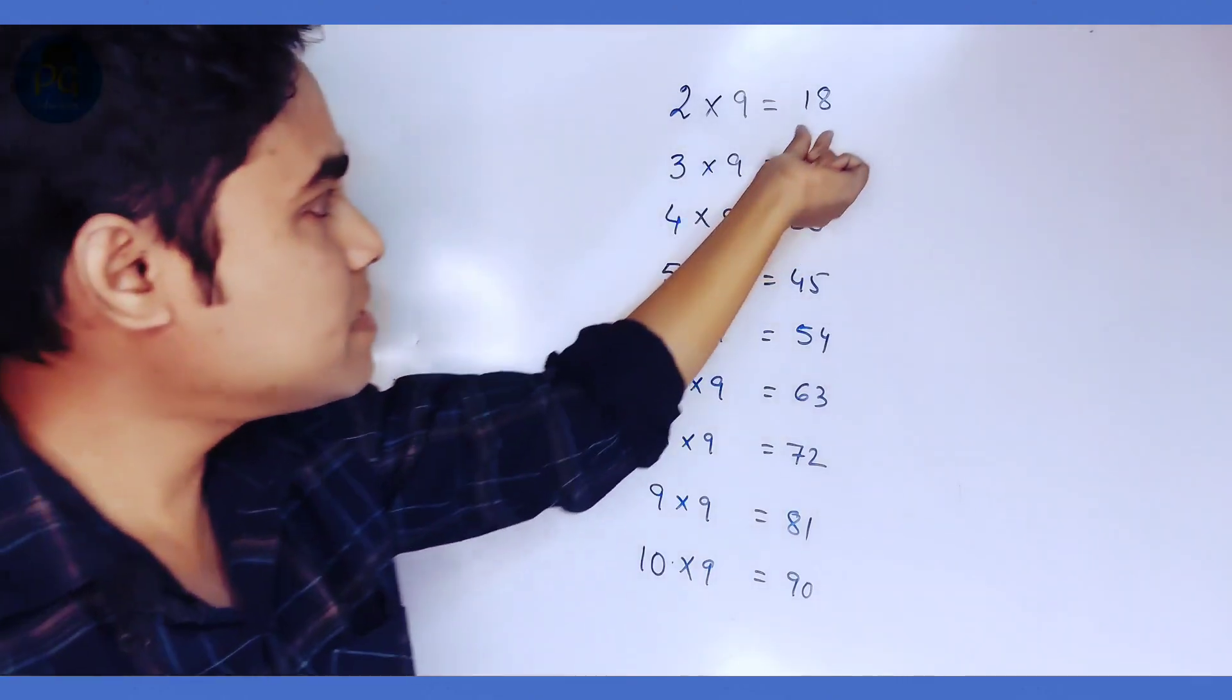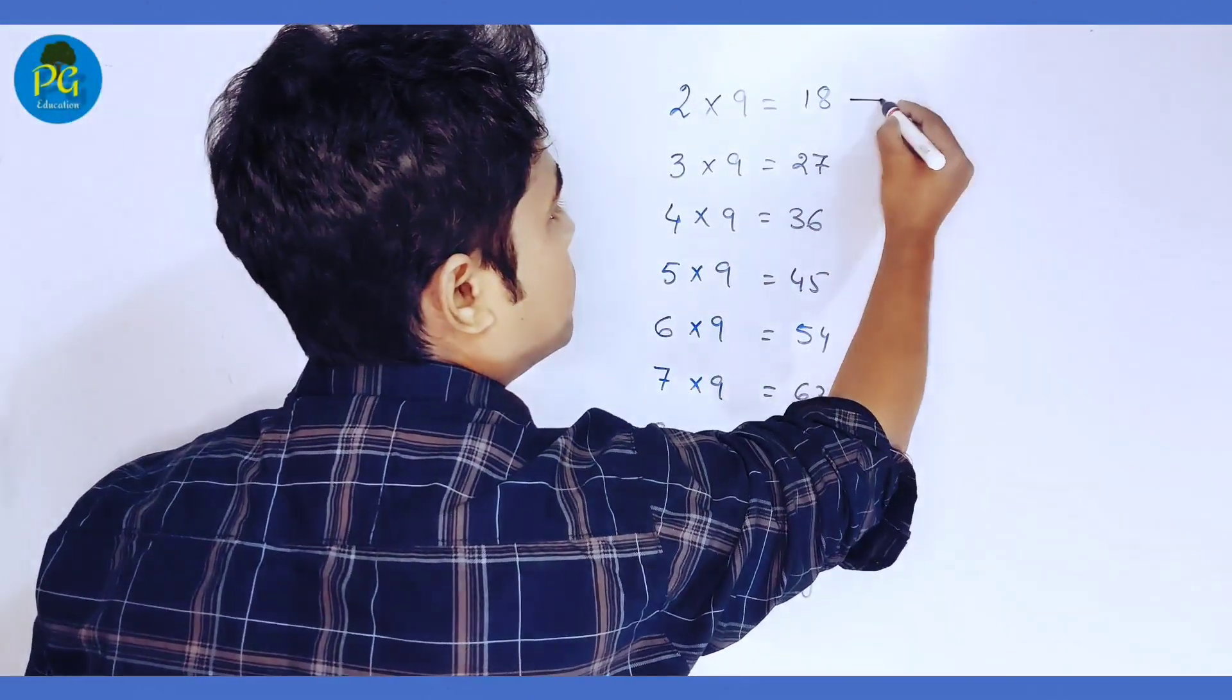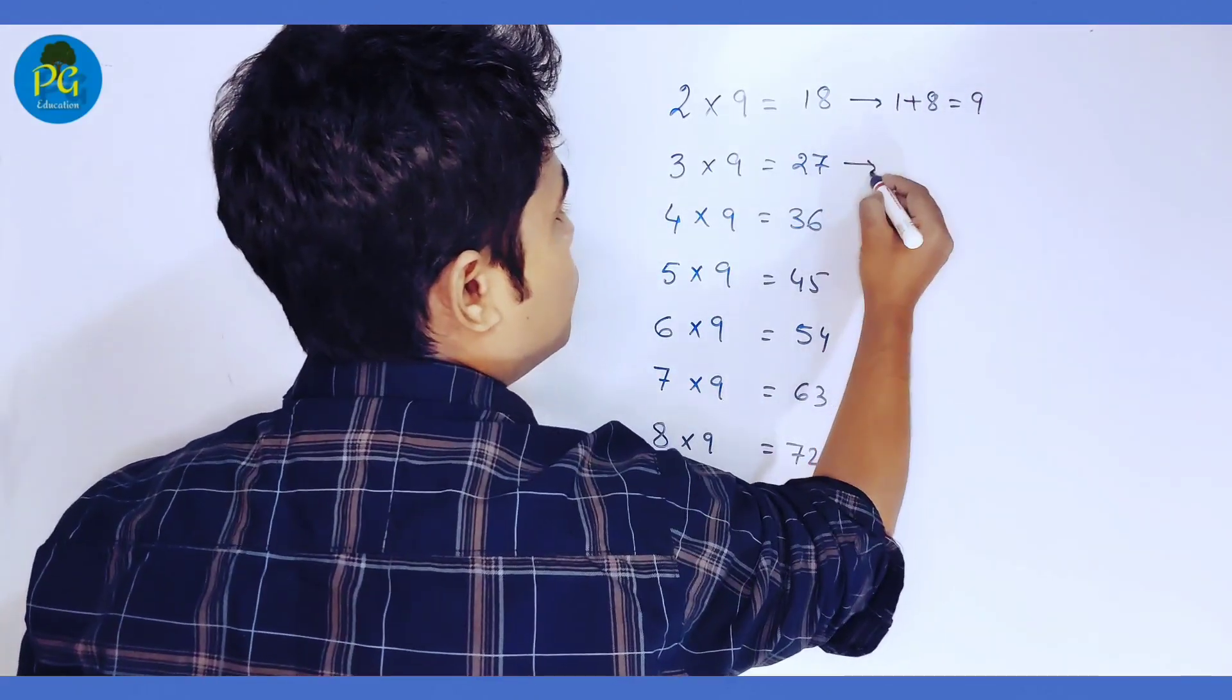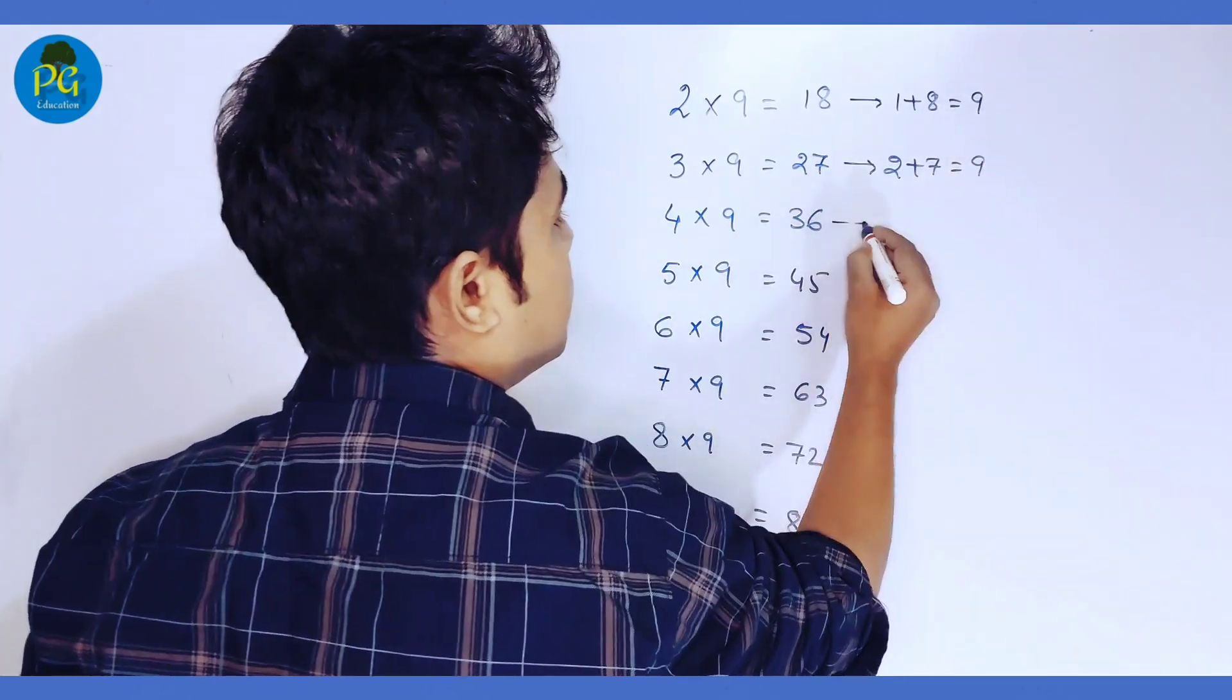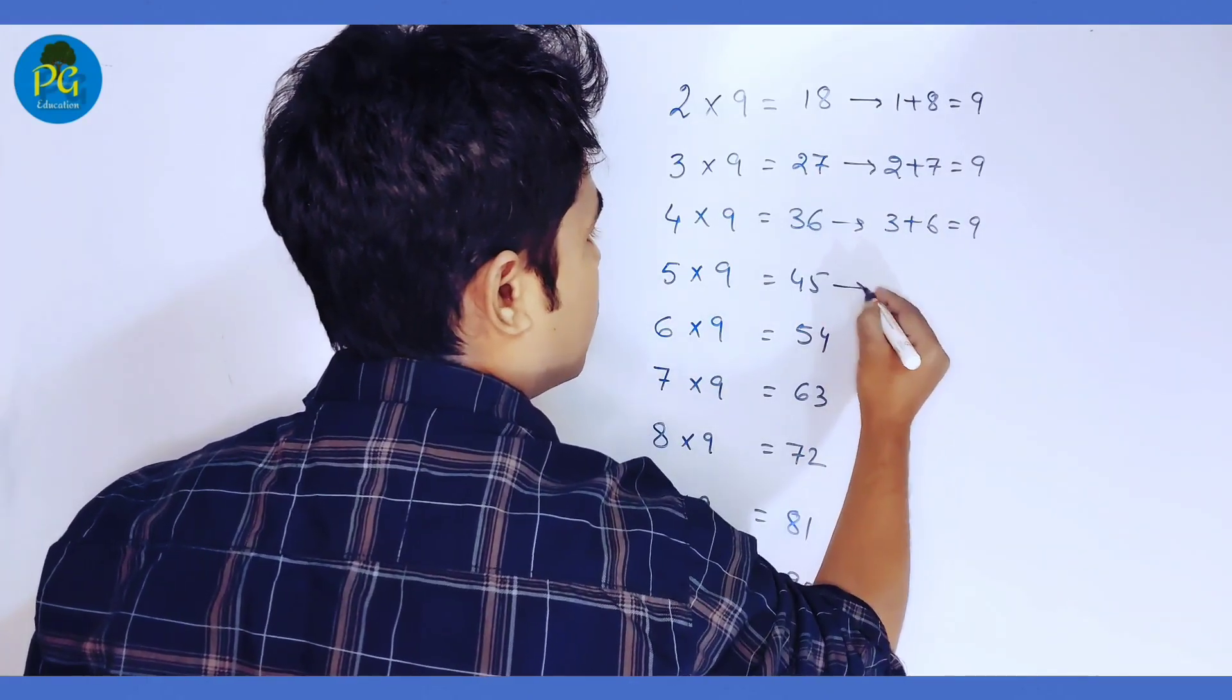Now, you have to add these digits. So, 1 plus 8 becomes 9, 2 plus 7 becomes 9, 3 plus 6 becomes 9 and so on.